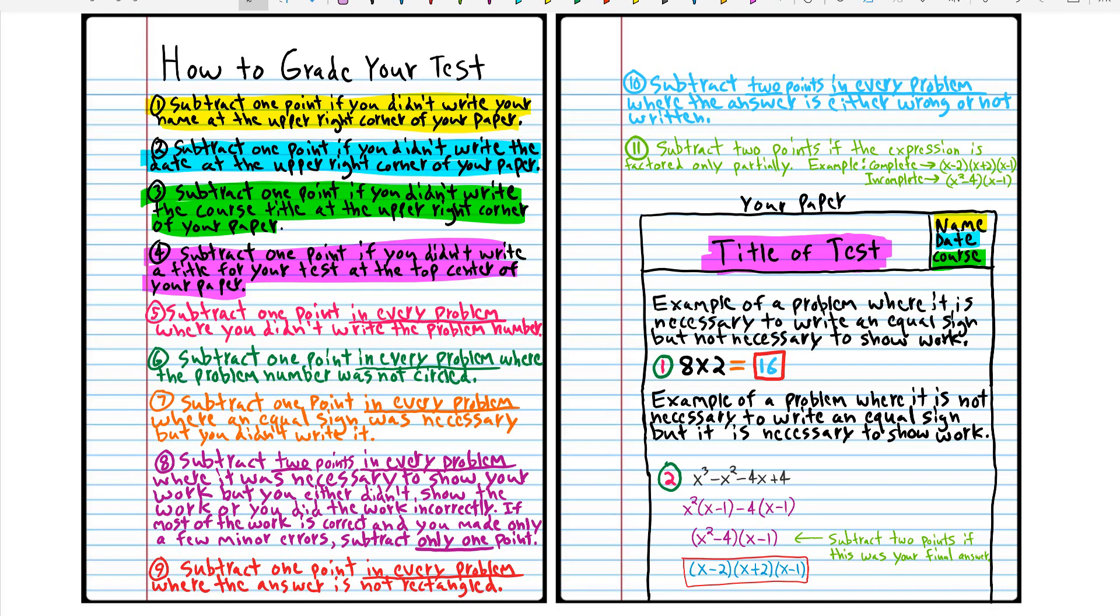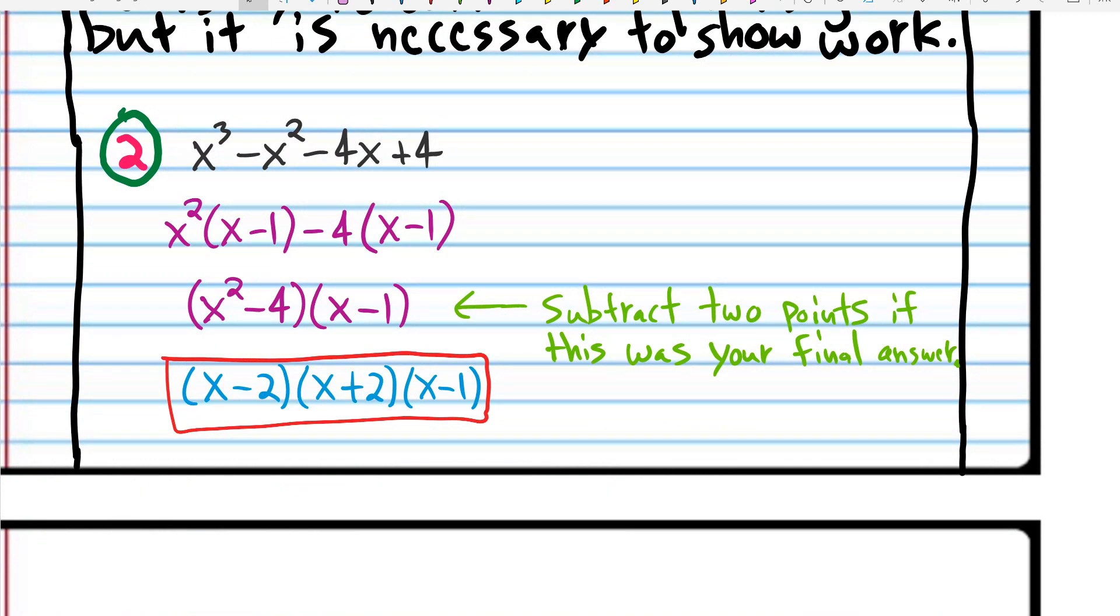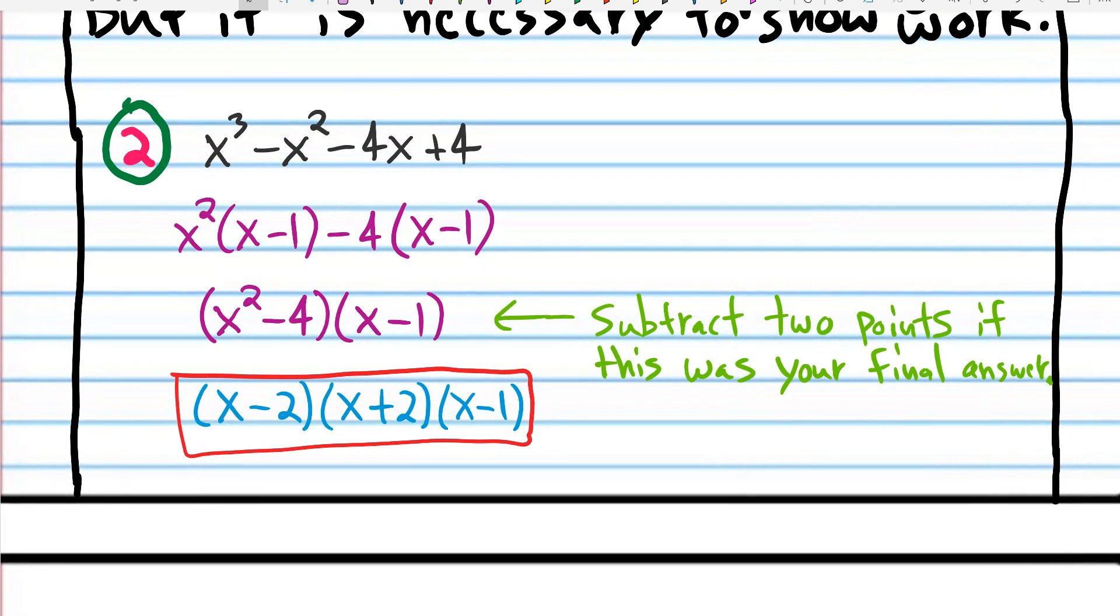I want you to be aware that if you don't factor completely, you're going to lose points. We have an example here. Here's the original problem. Then we factor. We get to this point here. And if you stop here, you're going to lose two points because the expression is not factored completely. So just be aware that in some of these problems it's going to look like you're done but you're not. You have to factor completely. So here we have the difference of two squares and we can factor it to x minus 2 times x plus 2.